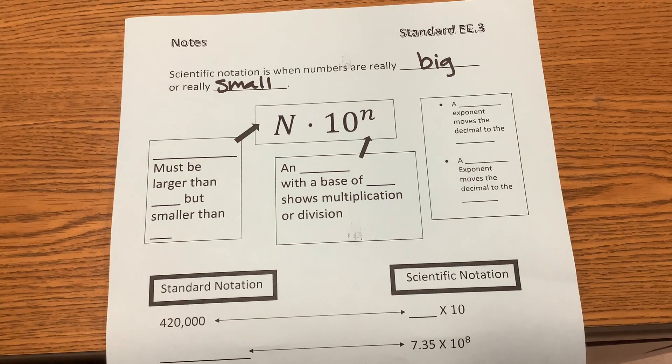Okay, so really small numbers being decimals that are extended or very large numbers that are in the millions, billions, or trillions or beyond.